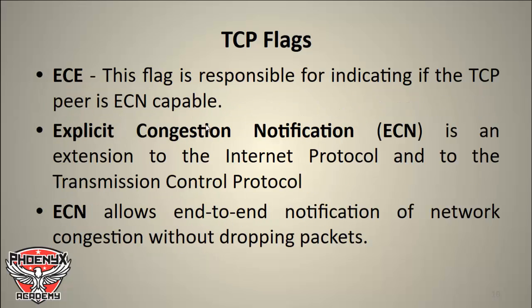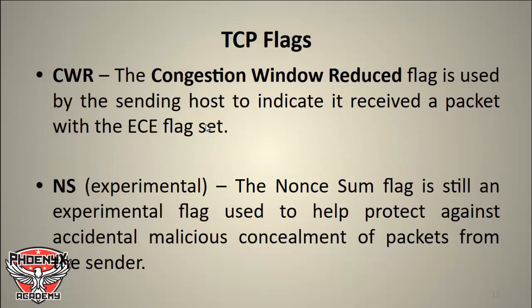There are other types of TCP flags not in our mnemonic. The ECE flag indicates if the peer is ECN-capable. ECN stands for Explicit Congestion Notification — an extension to the Internet Protocol and TCP/IP that allows end-to-end notification of network congestion without dropping packets. The Congestion Window Reduced (CWR) flag is used by the sending host to indicate it received a packet with the ECE flag set. The NS (Non-SUM) flag is still experimental and is used to help protect against accidental or malicious concealment of packets from the sender.